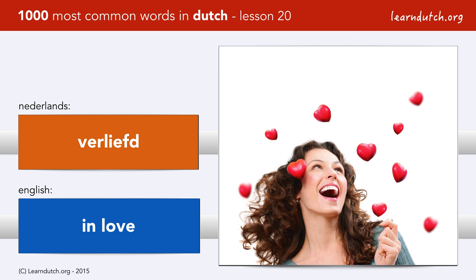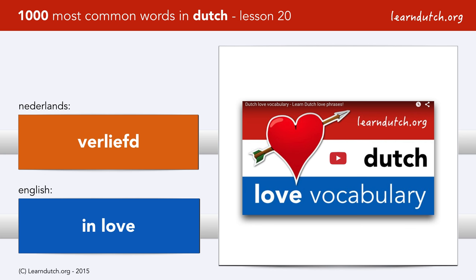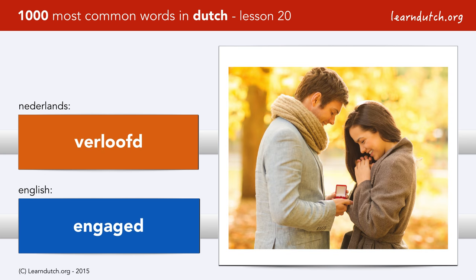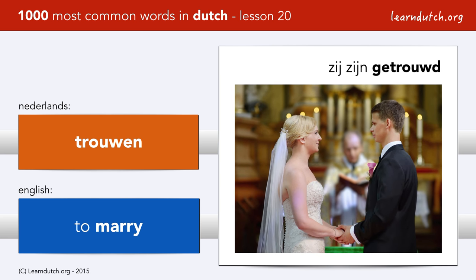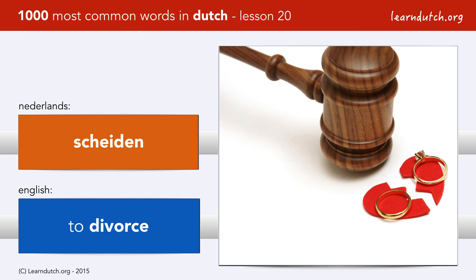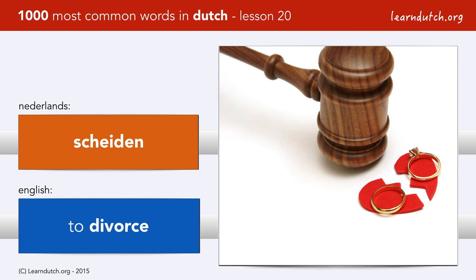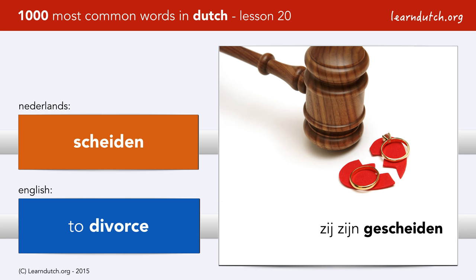Now if you want to know more words related to love, I recommend you to watch my love vocabulary video. Verloofd. Trouwen. Using the past participle — they are married — we say ze zijn getrouwd. But not all stories have a happy ending. Scheiden. Zij zijn gescheiden.